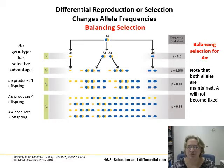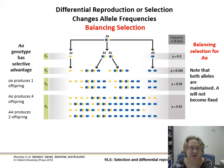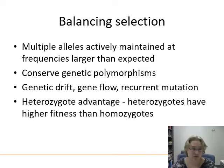Differential reproduction changes allele frequencies. Balancing selection — also called stabilizing selection — occurs when there is an advantage to being a heterozygote. Both alleles are maintained in the population because it is really useful to have one copy of each. Multiple alleles are actively maintained at larger frequencies than expected, conserving what we call genetic polymorphisms.